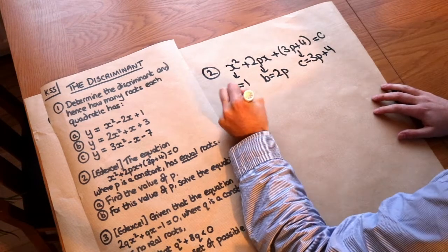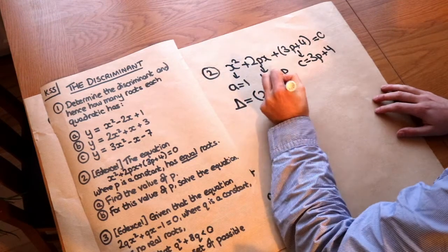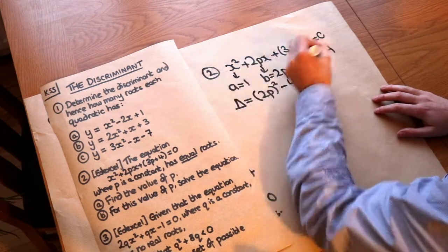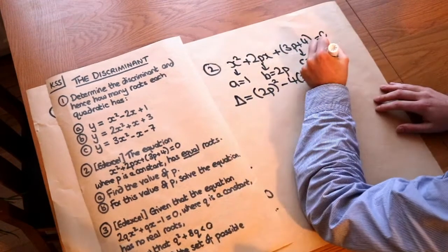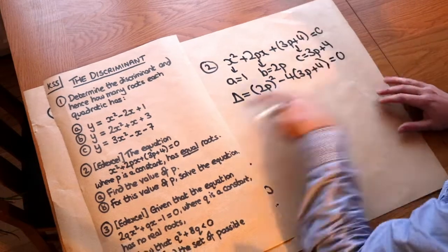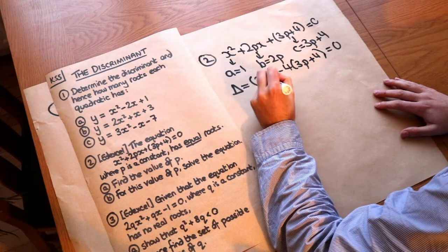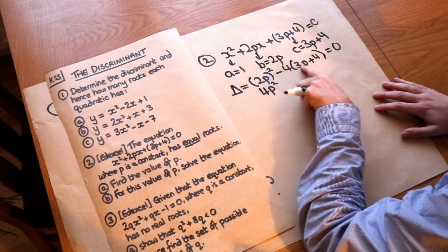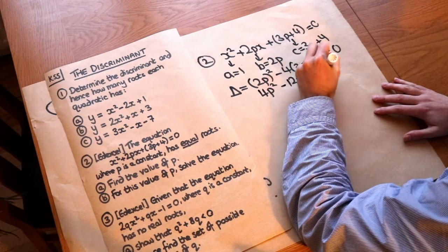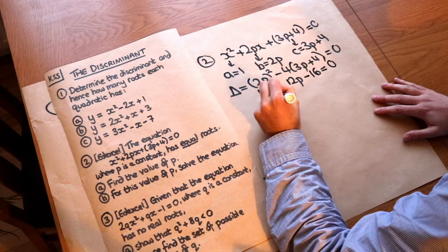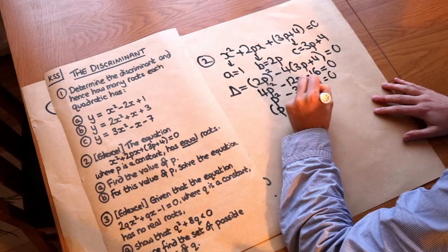So if we calculate the discriminant, the discriminant is b², so 2p all squared, minus 4 × 1 × (3p + 4). Now if we're told it has equal roots, then that discriminant will be equal to 0. So now we just have to solve this equation. So that is 4p², not 2p². Then we get minus 4 × 3p minus 12p, and minus 4 × 4 is -16 = 0. Let's divide both sides of the equation by 4.